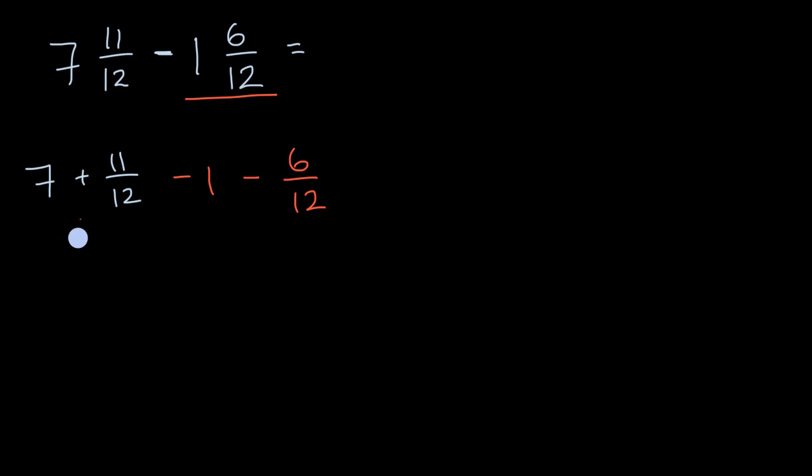Now why is that useful to think about it that way? Well now, you can think about the whole number. So you could say this is going to be seven minus one plus 11 twelfths minus six twelfths.